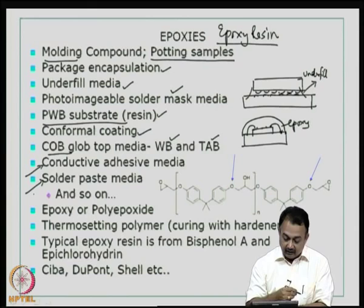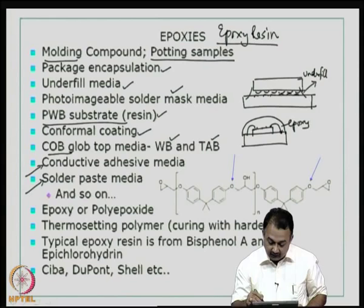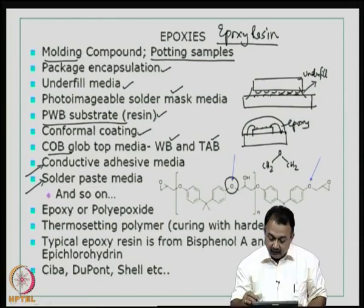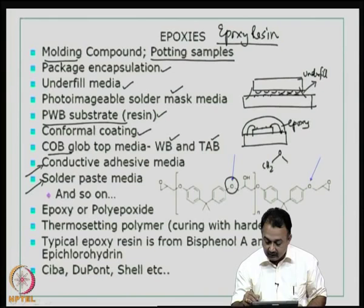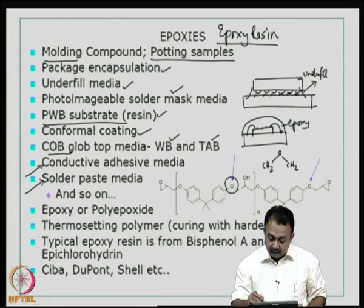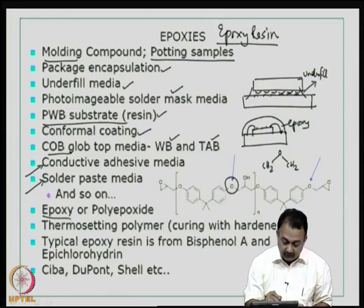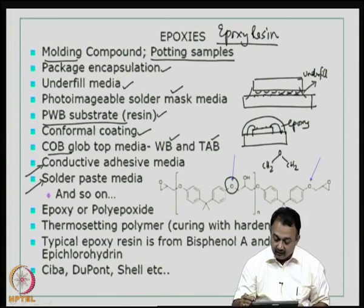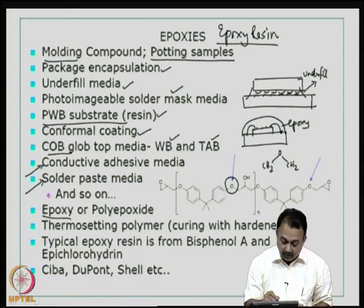If you look at this figure, you can see the chemical structure — this is the active epoxy group. Basically it is CH2OCH2 and you have the epoxy ring here, which is very active. You can have a long chain polymer coming out of different organic structures having epoxy rings. So it is known as epoxy or poly epoxide. It is a thermosetting polymer.